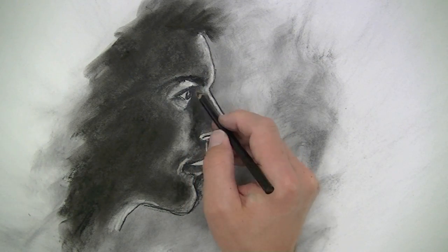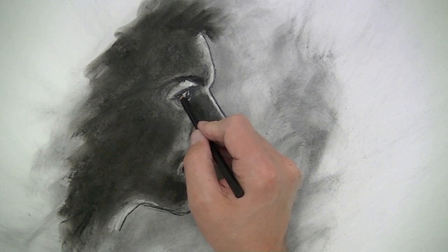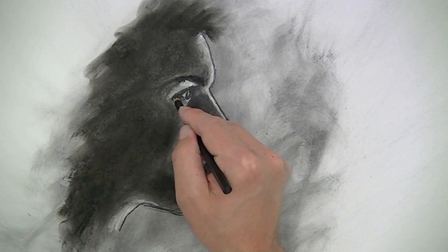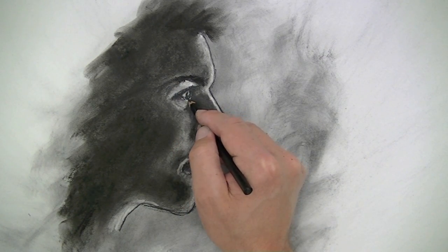Now we can go back with a compressed charcoal pencil and add a few more details and make a few areas darker if need be. Typically when you're doing a charcoal drawing you'll want to work back and forth between dark values and light values anyway.